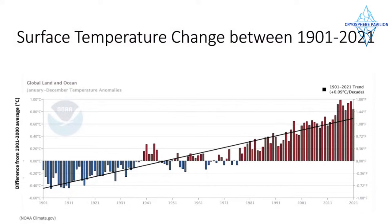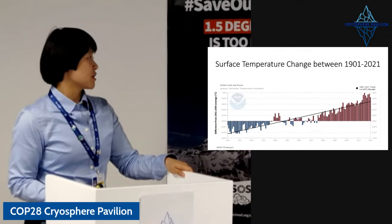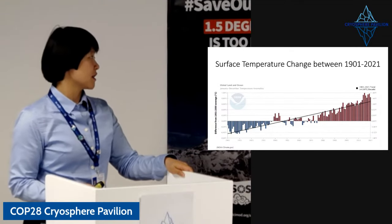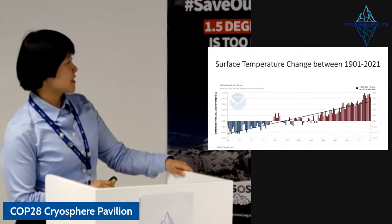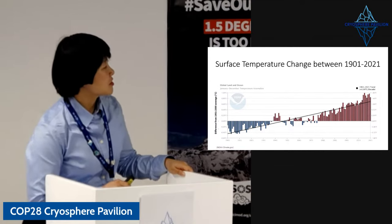The slide shows the surface temperature change between 1901 and 2021. It is showing the difference in global temperature average for respective years relative to the average value between 1901 to 2000. And you can see that the global temperature has been rising at the rate of 0.09 degrees Celsius per decade.